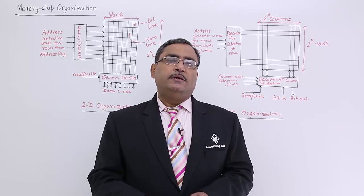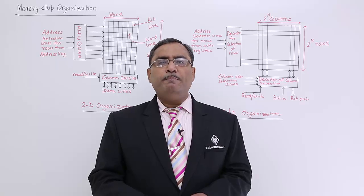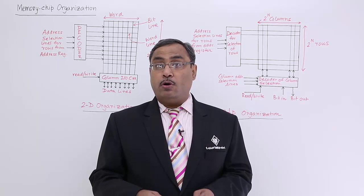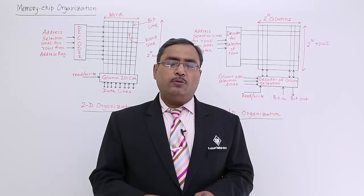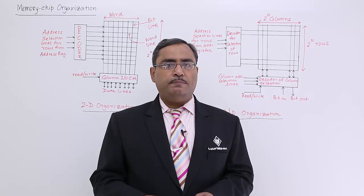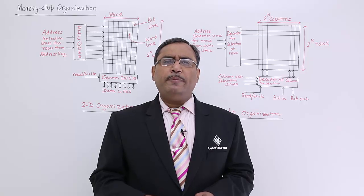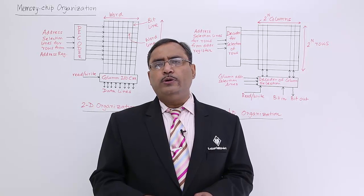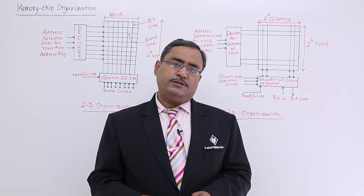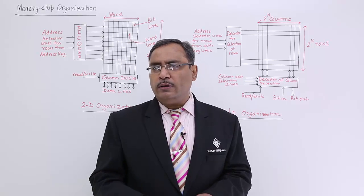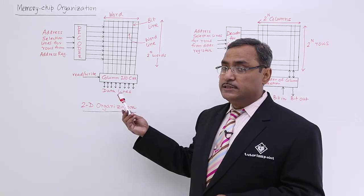This session's topic is memory chip organization — how memory, whether RAM or ROM, gets fabricated and how chip organizations are made. We are having two categories: one is the 2D organization and another one is the 2 and half D organization. I am having a suitable diagram, so I shall discuss with my diagrams.